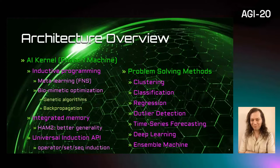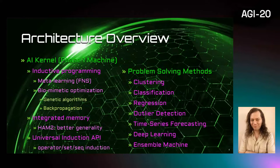In the Alpha family of architectures, the phase one machine is a reusable general-purpose machine learning facility which solves general induction and transfer learning problems. In Omega, we call this core component the AI kernel, and it contains a stack of inductive programming and machine learning algorithms that can work with any reference machine.